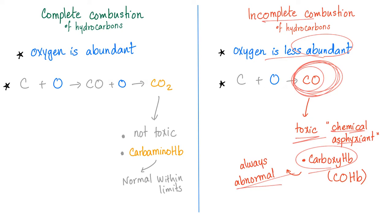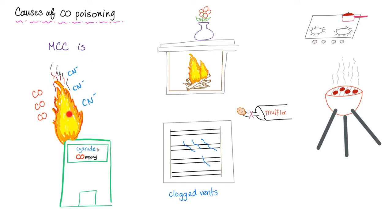Carboxyhemoglobin is always abnormal. What are the causes of CO poisoning? The most common cause is fires — also the most common cause of cyanide poisoning. Other causes include heaters, firesides, clogged vents, stoves, and barbecues. This is a classic exam question: a family all develops headache simultaneously after an indoor barbecue. Diagnosis: carbon monoxide poisoning. Treatment: give oxygen.